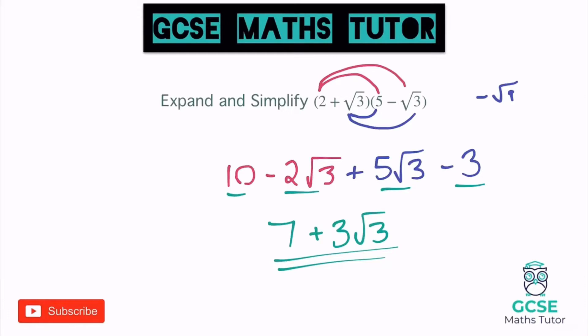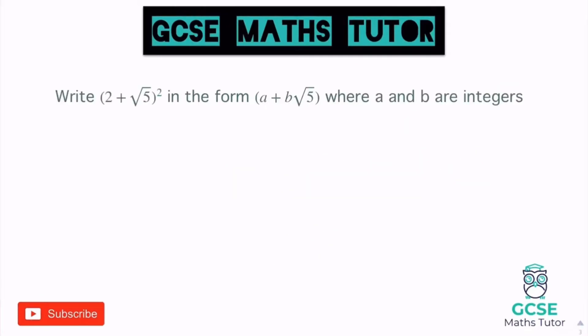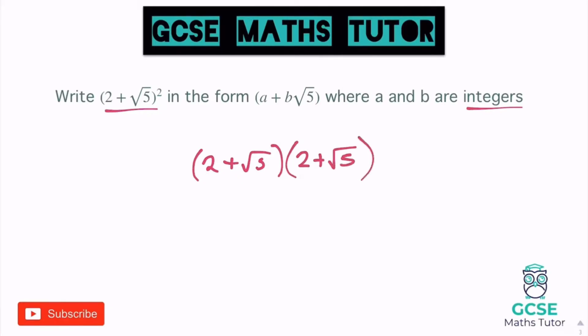On to the last example before you have a go. Slightly different wording: write (2 + √5)² in the form a + b√5, where a and b are integers — integers being whole numbers. This bracket squared is just a double bracket — another way of writing a bracket times itself. So I'm going to rewrite this as (2 + √5)(2 + √5).